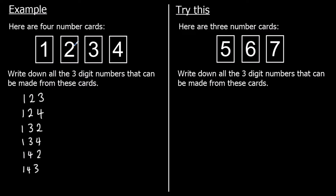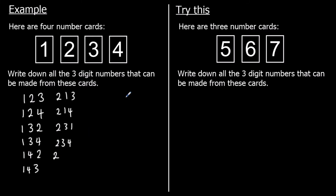Then I'll move on and put two in the hundreds. With two in the hundreds and one in the tens, I could have three or four in the ones. With two in the hundreds and three in the tens, I have one or four in the ones. And also with two in the hundreds, I could have four in the tens, and then a one or a three in the ones.